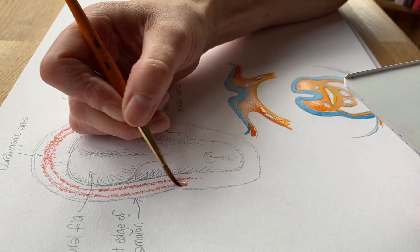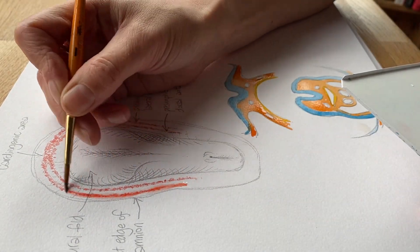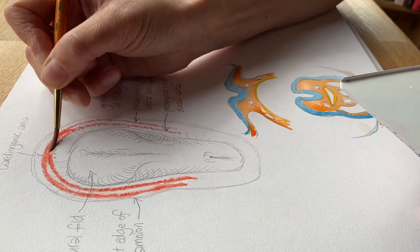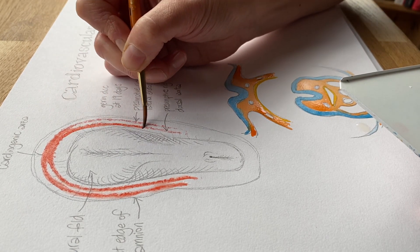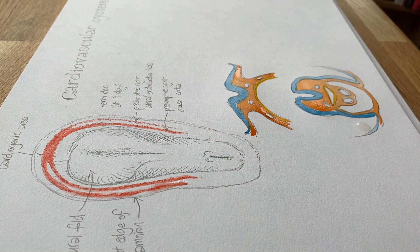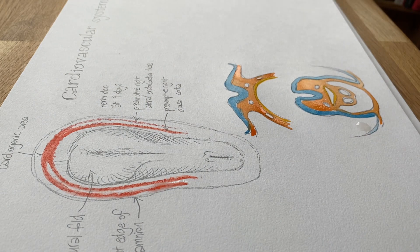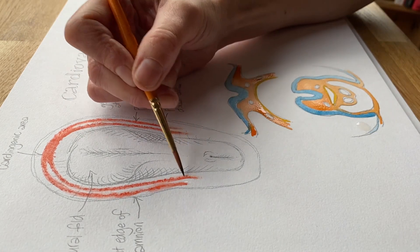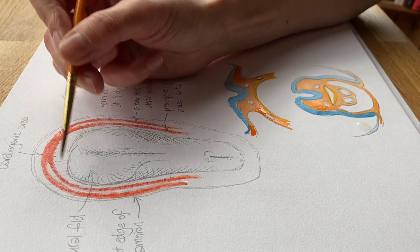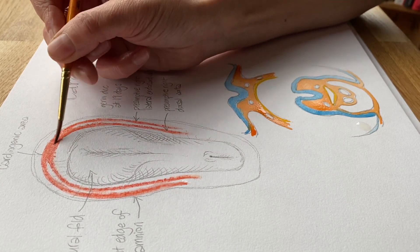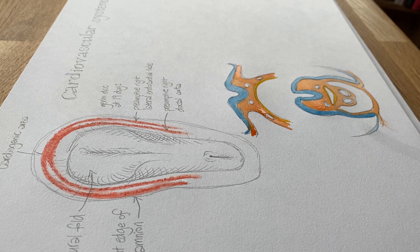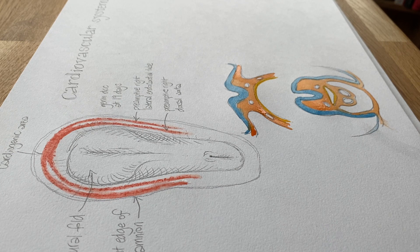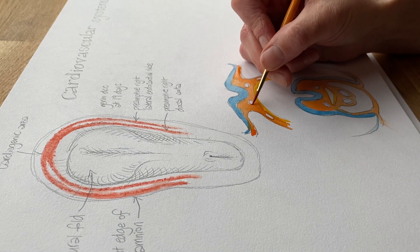I used watercolour pencil to indicate those blood islands. They're made up of cells which are called hemangioblasts. The heme bit means that some of them go on to make blood cells, some of them go on to make blood vessels. That's what the angio bit means, and those hemangioblasts have themselves arisen out of those mesoderm precursor cells. What I'm doing now is just using water to pick up the colour from the blood islands that I drew originally to show those cells joining up, and we can imagine them starting to create a pair of tubes on each side, tubes that are going to be filled with blood cells.